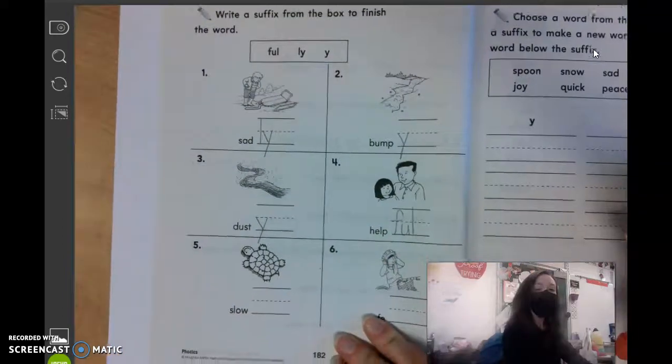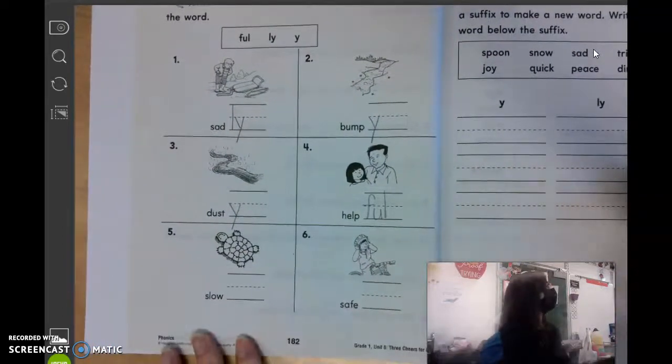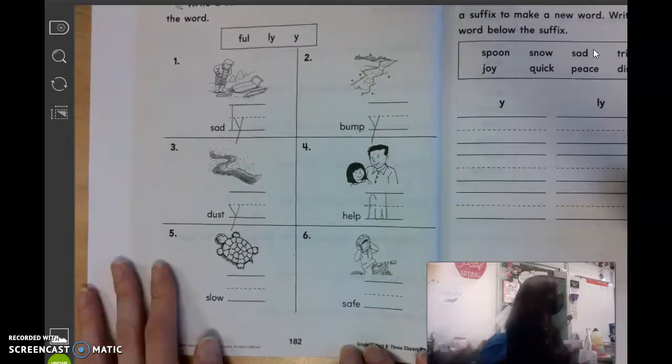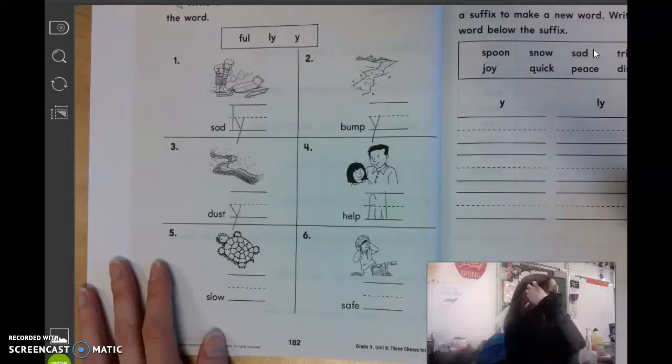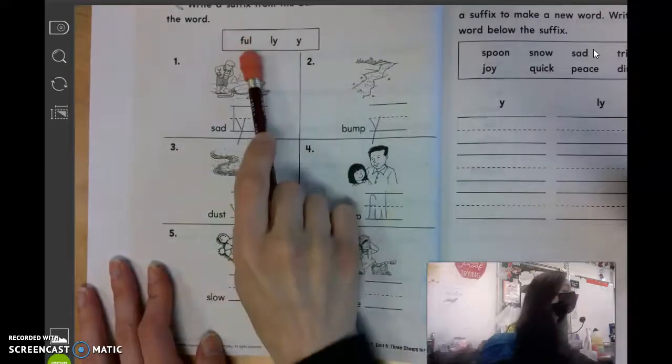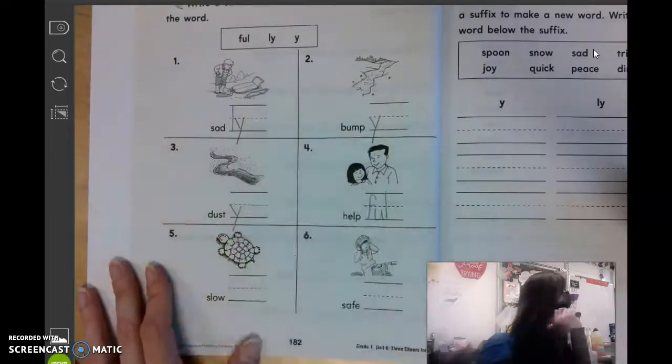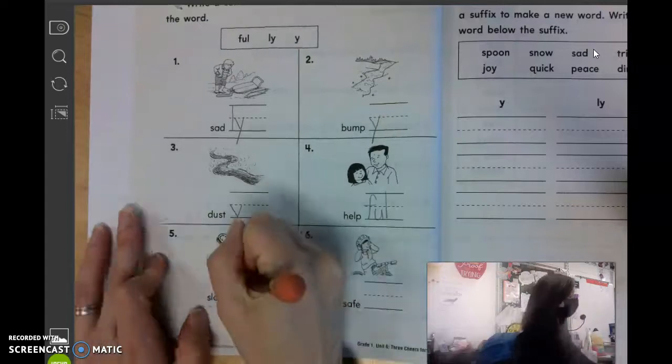Number five is slow. What do we add to that word? Vivian? Er is not why. Er is not one of them. You have to add full, lee, or why. See, we can only use these. Isabel, L-Y, slowly.